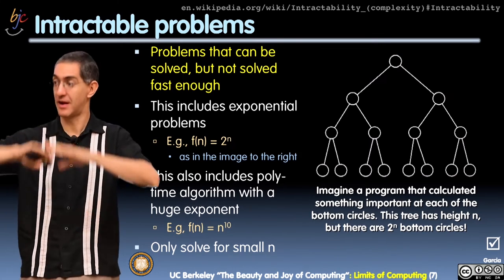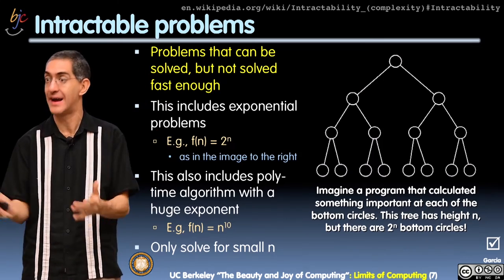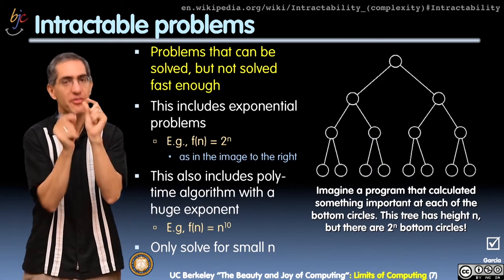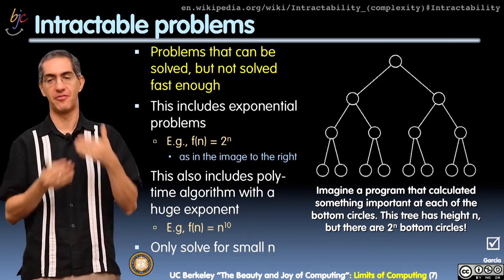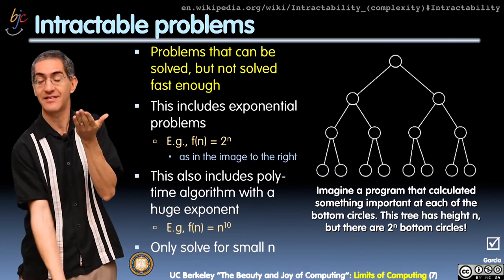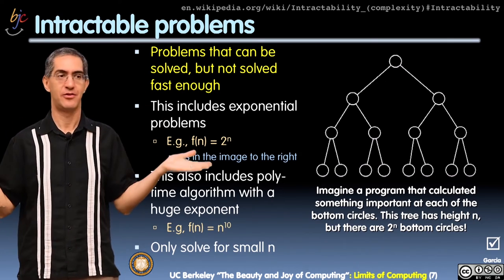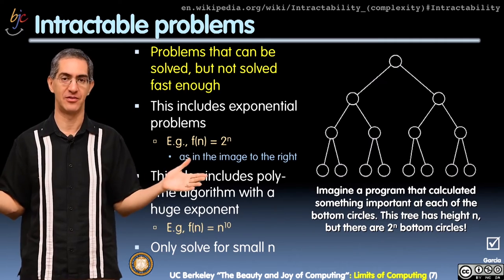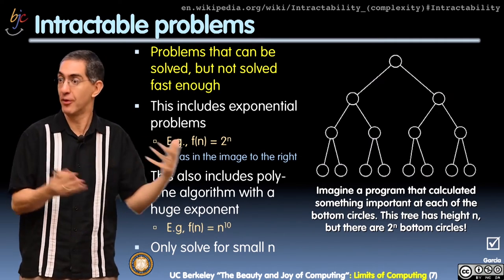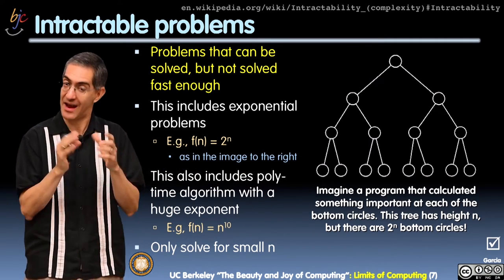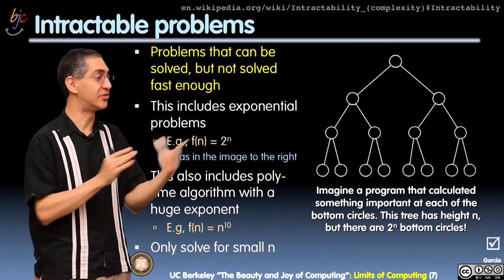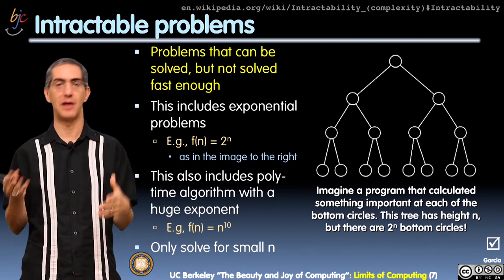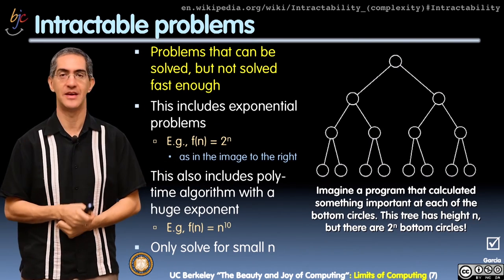It's not a polynomial solution — it's intractable. We can solve this for small n, but for large n, if the height is 100, two to the 100 is bigger than anything we could ever compute in our lifetimes. That's why we don't like these problems. We'd love to have polynomial solutions, but sometimes by the nature of the problem there's just no way to do it.